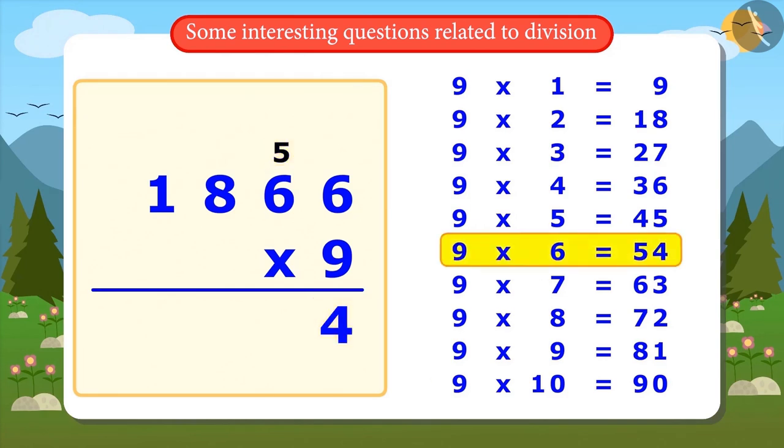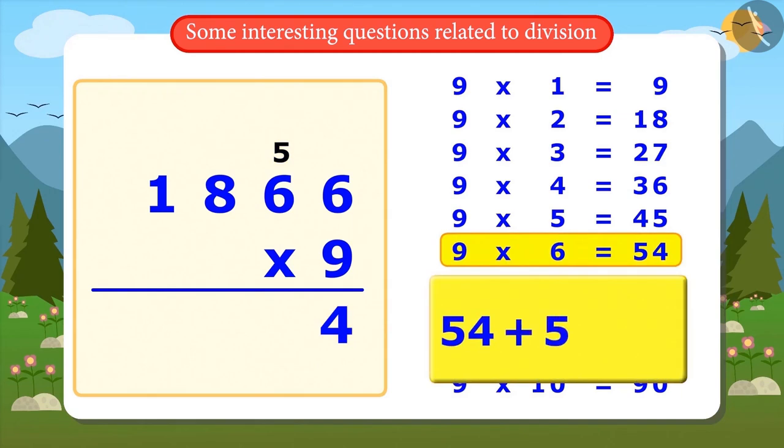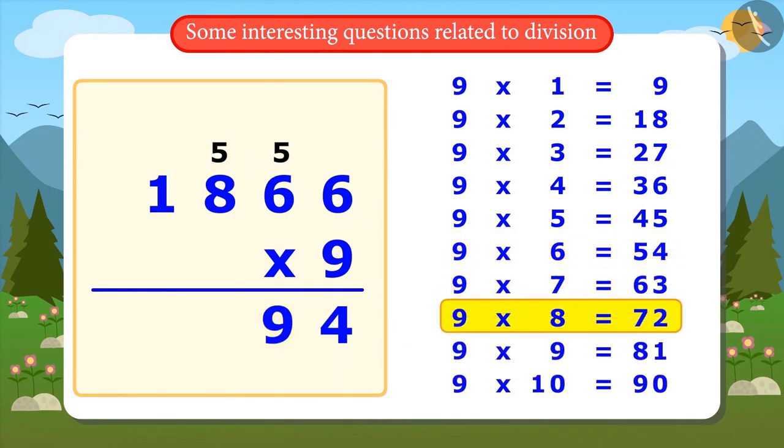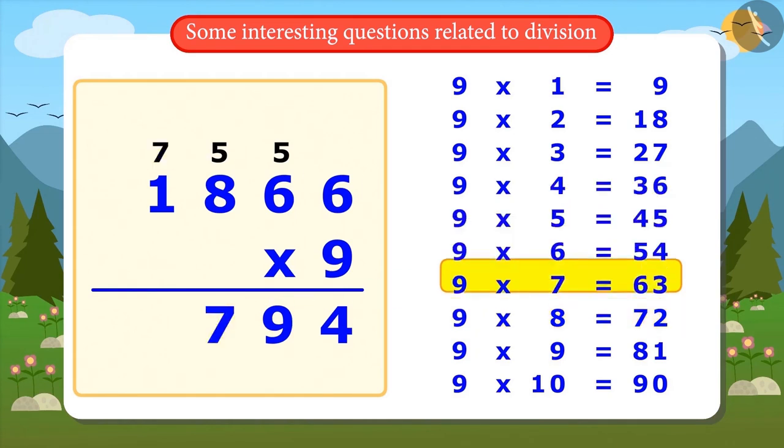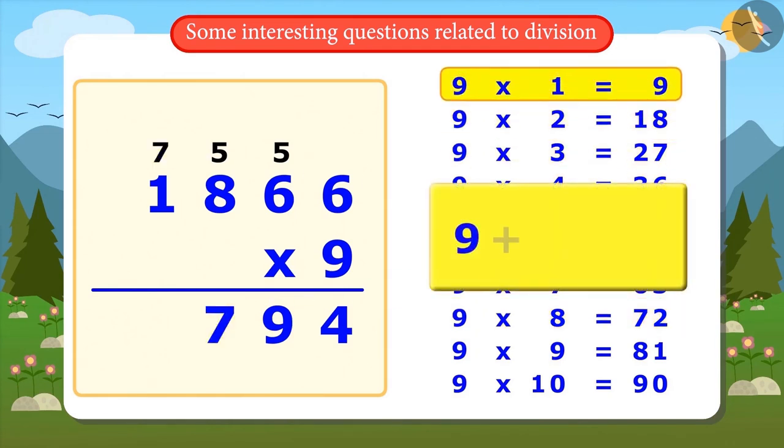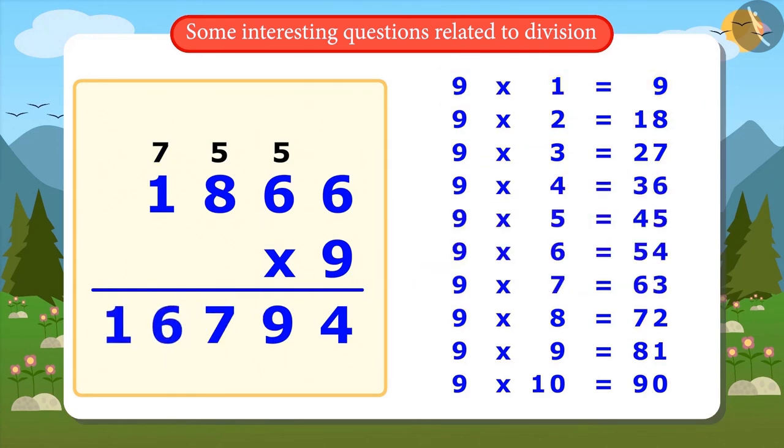9 6's are 54. Adding 54 and 5 will be 59. We will keep 5 and 9 at their designated places. 9 8's are 72. 5 added in 72, then the answer came 77. Similarly, 77 will be written in this way. 9 1's are 9. 7 will be added to it. So 16 will come. The answer is 16,794.